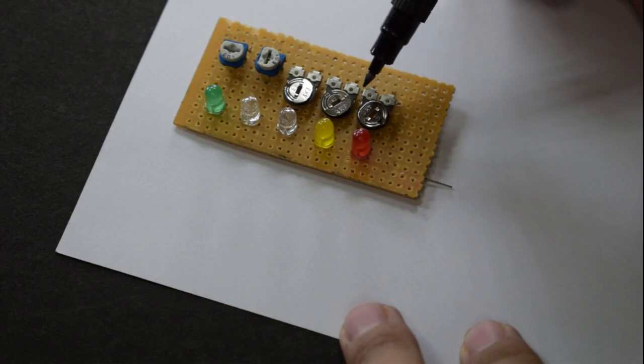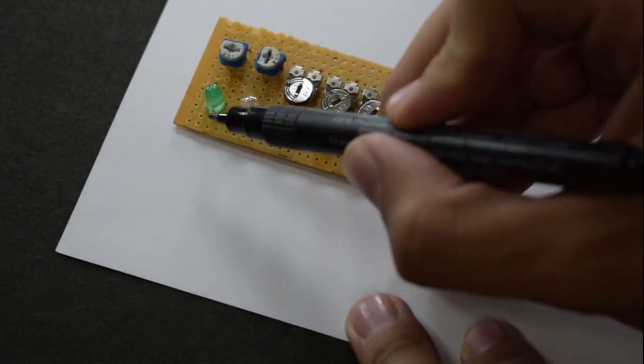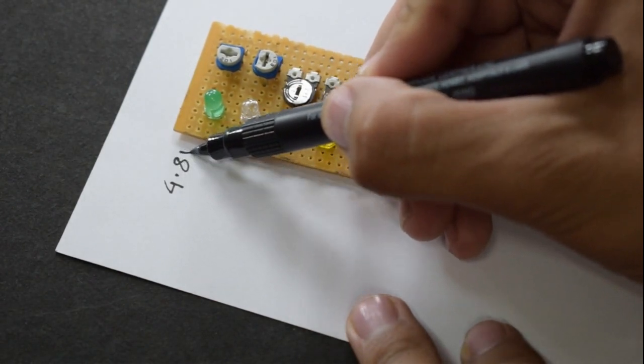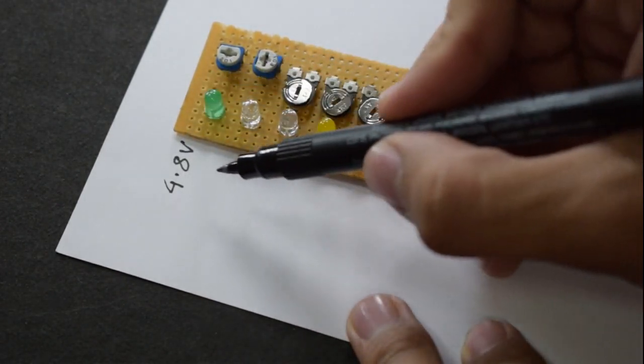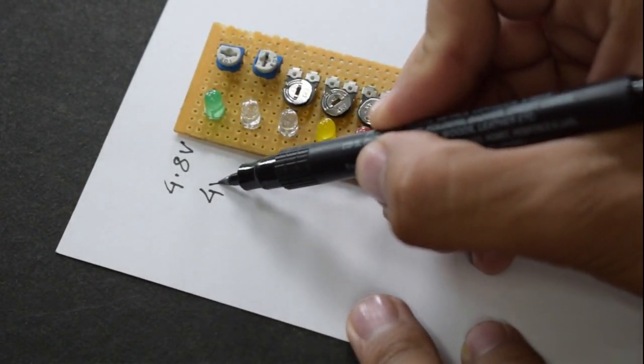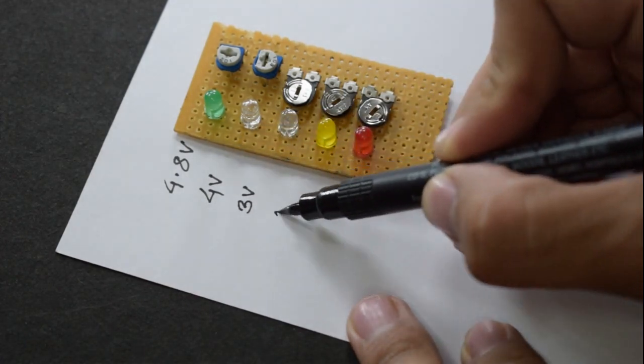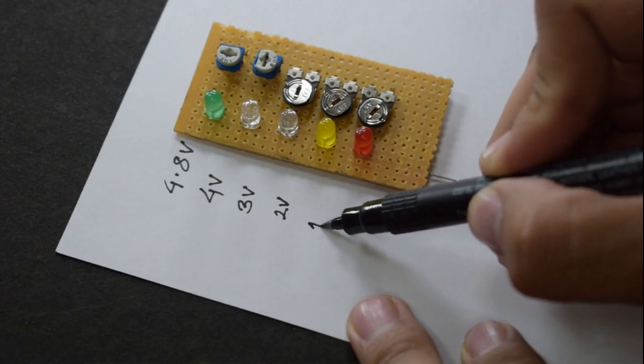The tricky part is setting the potentiometer values. Like the green LED should glow for 4.8 volts, the blue LED should glow for 4 volts, the white one for 3 volts, yellow for 2 volts, and the red one for 1 volt.